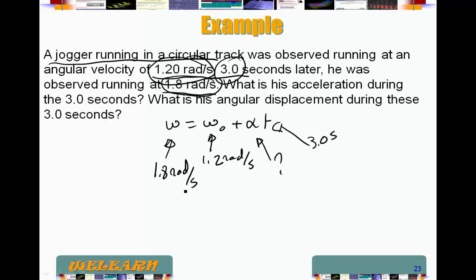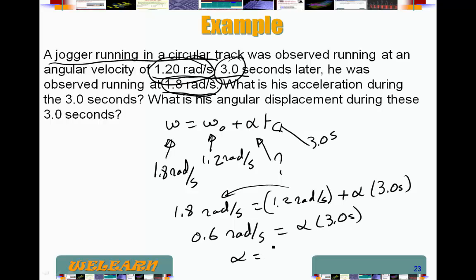Okay, so we plug them in. 1.8 radians per second is equal to 1.2 radians per second plus alpha times 3.0 seconds. So, move this to the other side. So we're left with 0.6 radians per second is equal to alpha times 3 seconds. And alpha is just 0.6 over 3. So 0.2 radians per second squared.